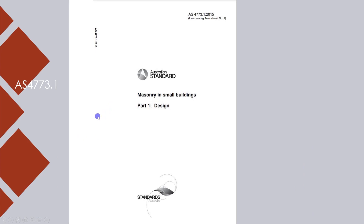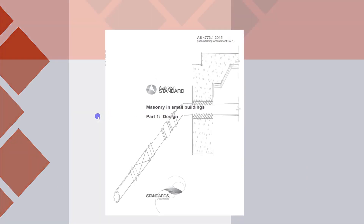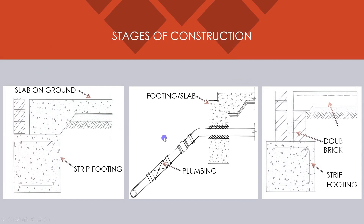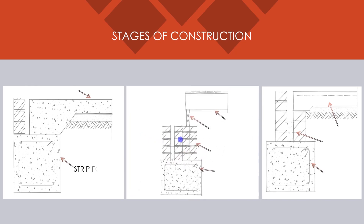The first step in the construction process is to lay the reinforced footings and install the sanitary drainage. You can form a strip footing and slab separately, or a ground beam and slab together as mentioned before. The bricks are laid up to the slab floor level, or when using a timber floor, up to the bottom of the bearer height.